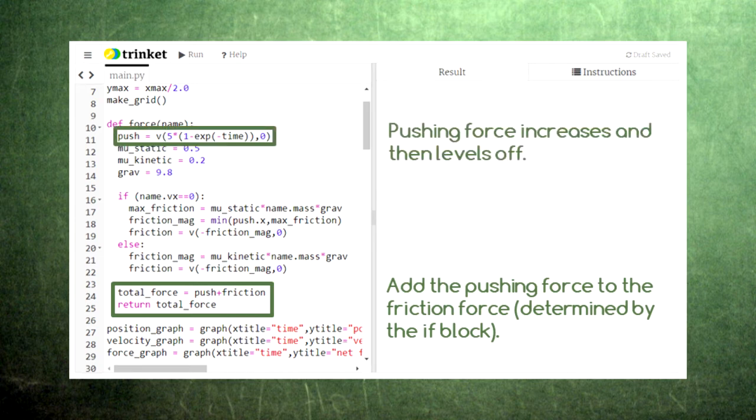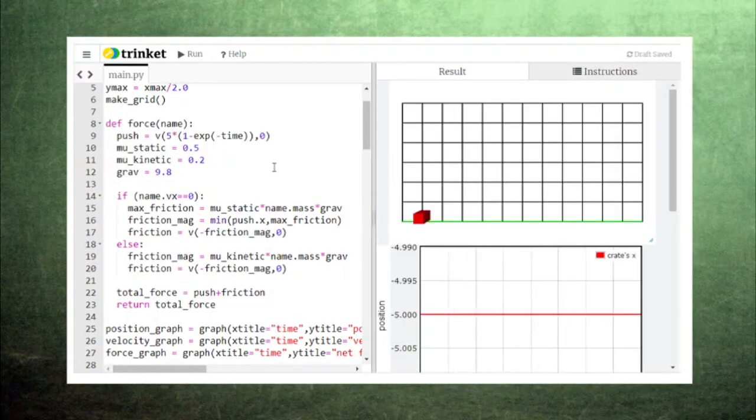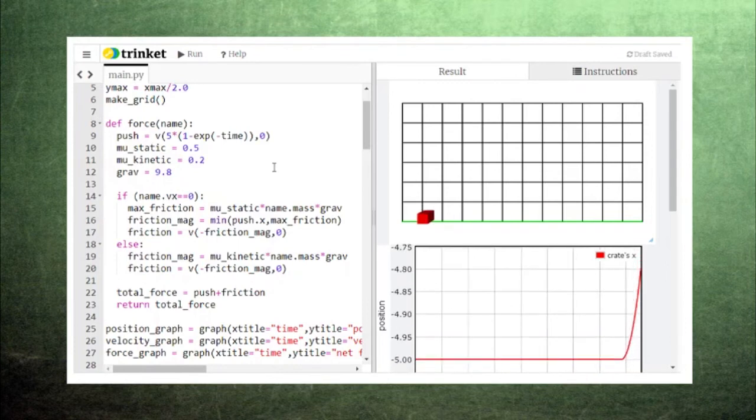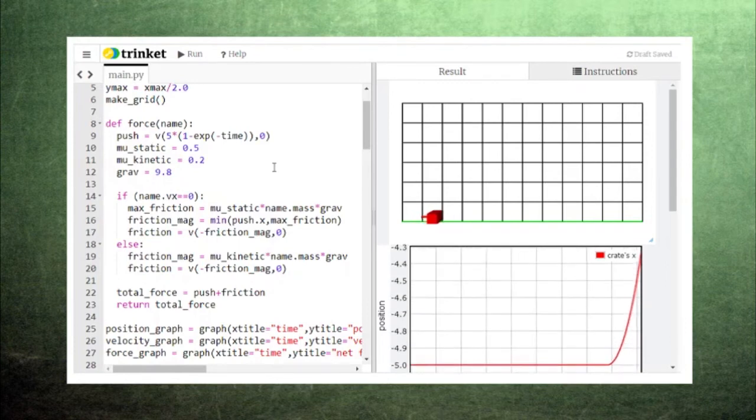Like in the previous episode, this pushing force will increase with time, starting with zero. That means that we should see static friction at first, followed by kinetic friction. If we run the code, the crate remains stationary at first because the static friction is exactly canceling the pushing force. Then, the crate suddenly breaks free when our pushing force exceeds the maximum static friction force.